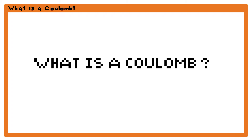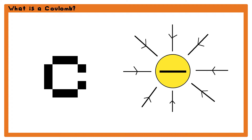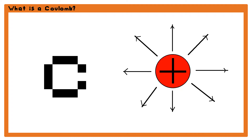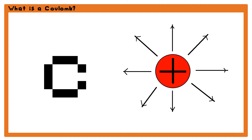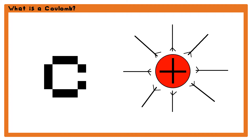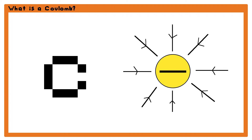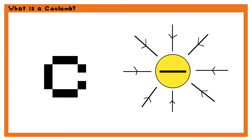The coulomb was named in 1880 after French engineer and physicist Charles Augustin de Coulomb, who also has a law named after him that we'll cover in a future video. He did important work on electrostatics, in which the unit of a coulomb is very important.